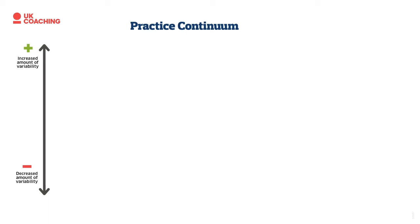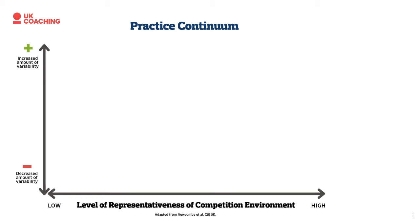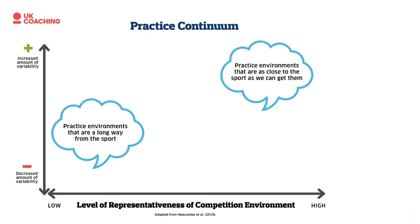On the x-axis is the level of representation. At the high end are environments as close to the performance environment as possible, and at the bottom end are environments that are as far away from the performance environment as we might use in training. There are pros and cons to operating at either end of this continuum. We lined up different practices from different sports to help make these decisions.